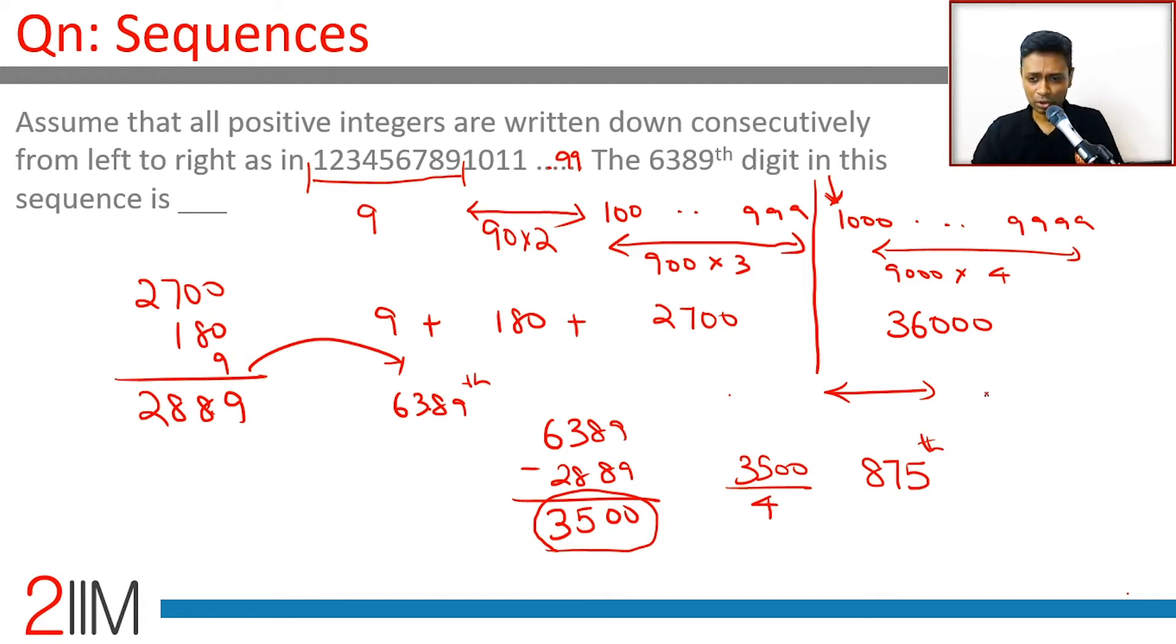The first 4-digit number is 1000. Second is 1001. Third is 1002. 875, this is 1, 1000 plus 874. 1874.